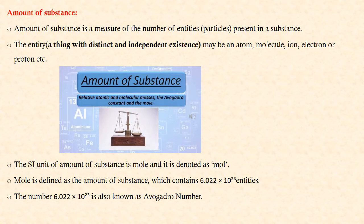Amount of substance: Amount of substance is a measure of the number of entities or particles present in a substance. The entity is a thing with distinct and independent existence. It may be an atom, molecule, ion, electron, or proton.